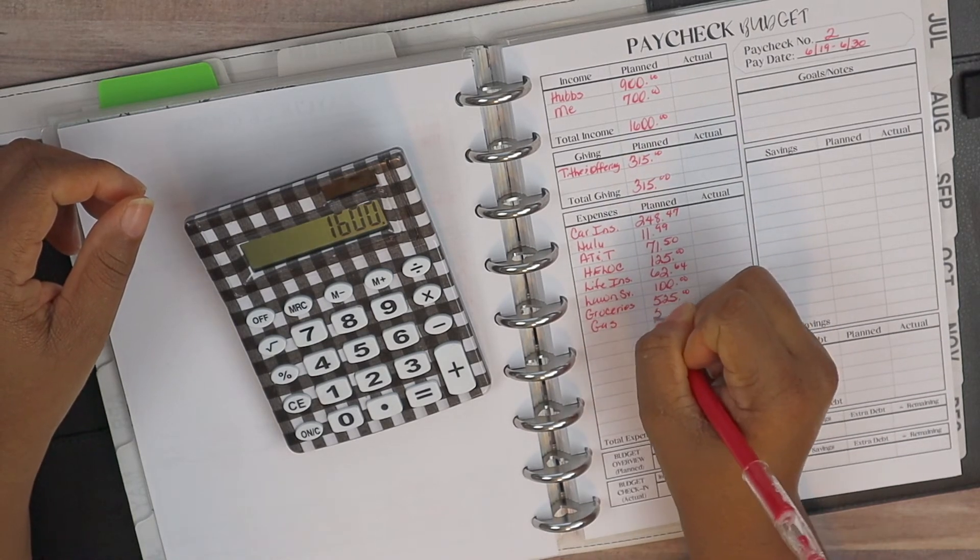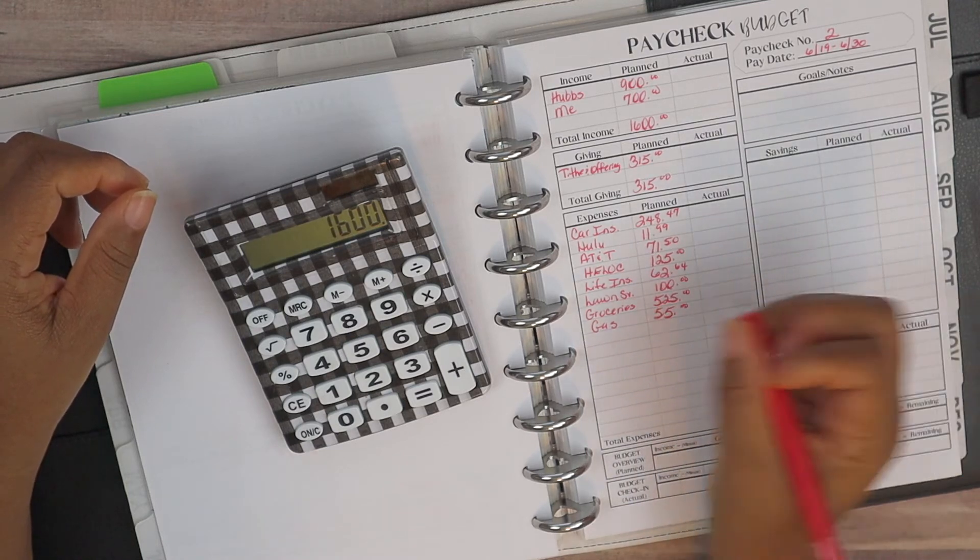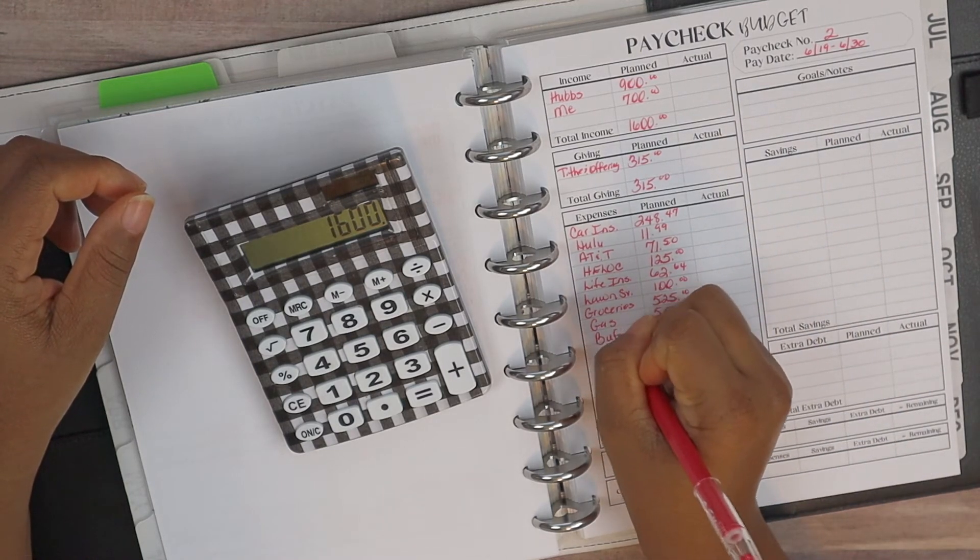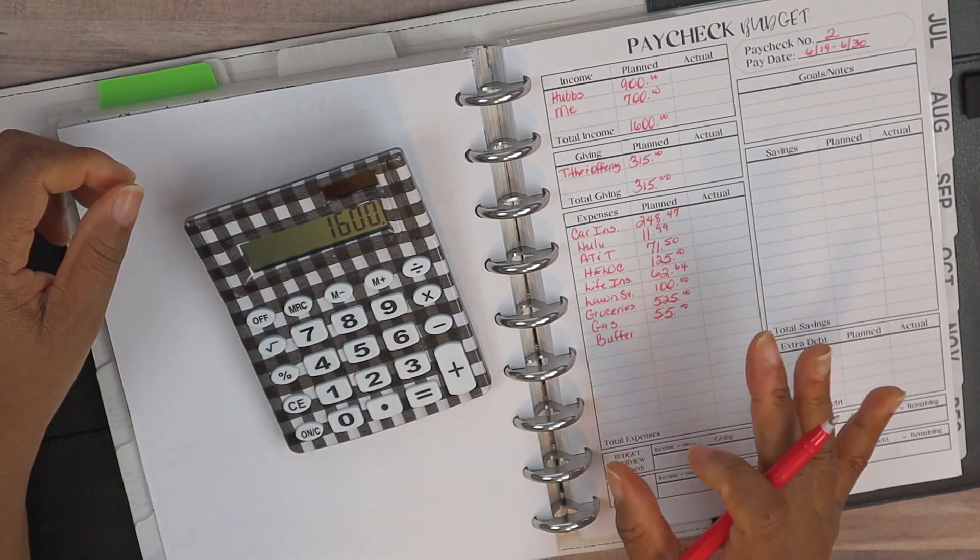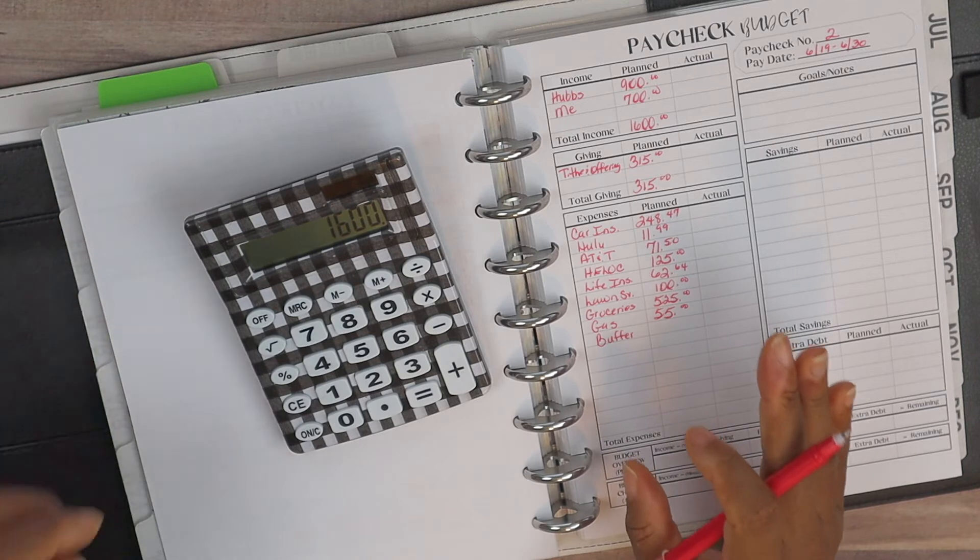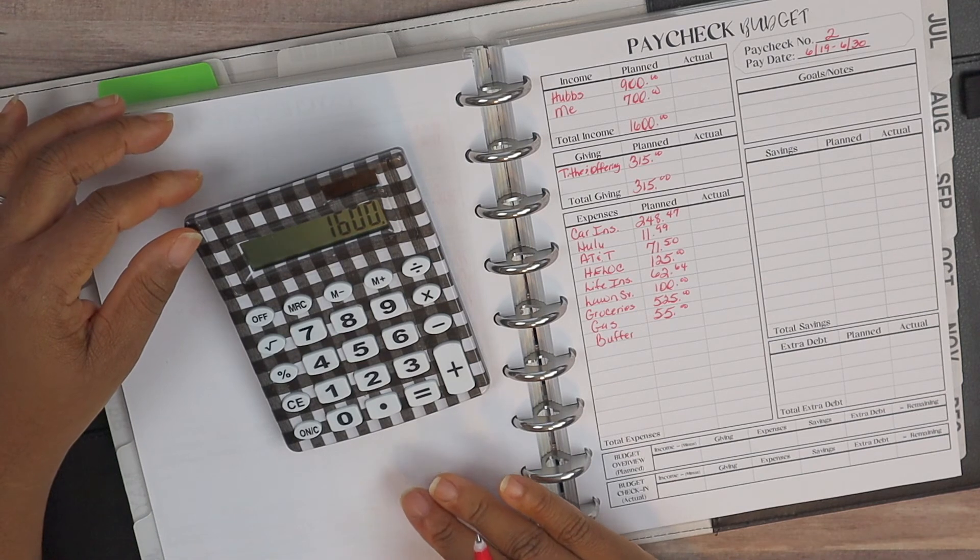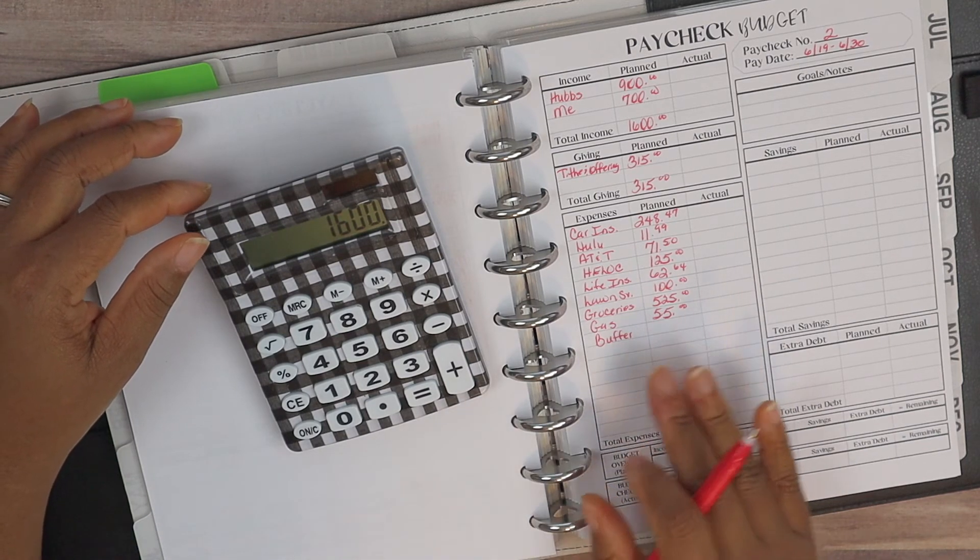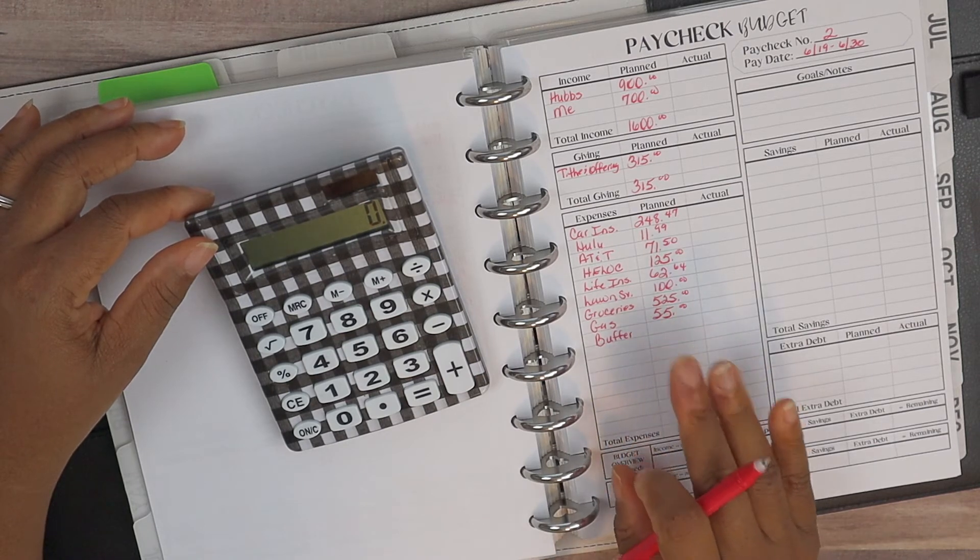And then for gas we are going to allocate $55, and then we should have enough for a buffer. Now our buffer for the total month of June should not exceed the $103.12 that's on our monthly budget. So we've done a little bit from our paycheck budget number one, so we should have enough to take care of the remainder for our paycheck budget number two.